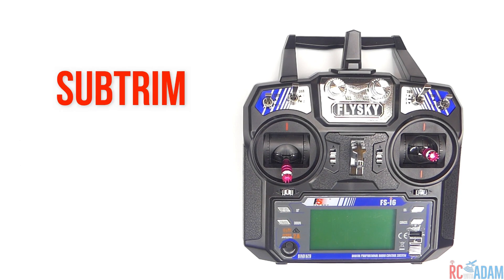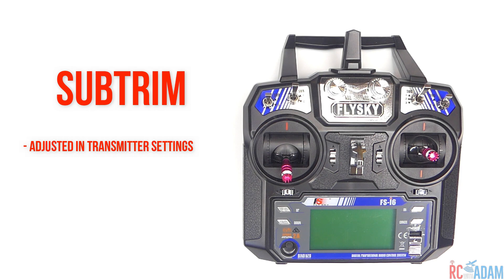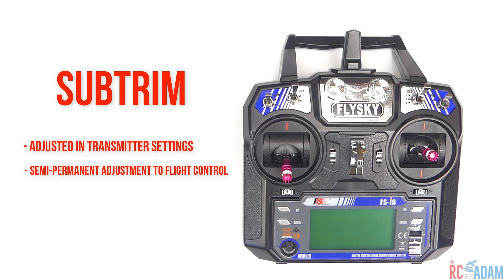Now let's talk about sub trim. Sub trim is basically the same idea as trim, except you actually adjust it in the settings of your transmitter, so it's a little bit more of a permanent type of trim. For example, if you're trying to straighten out a control surface and you don't want to use the trim button, you would use sub trim — it works in the background and the only way to change it is to go into the transmitter settings. This is useful because it may be easier than undoing a control horn or changing something with the actual servo, which can be time consuming or impossible depending on how you've built the airplane.